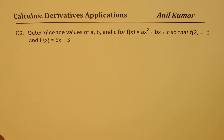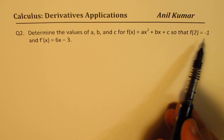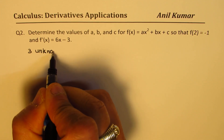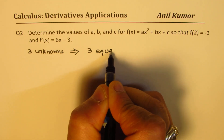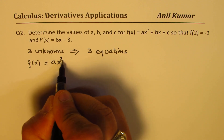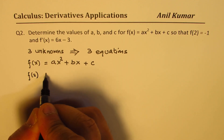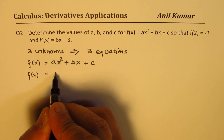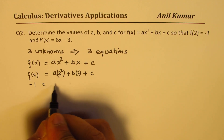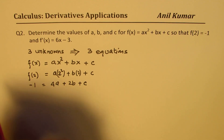Question number 2: determine the value of a, b, and c for the given quadratic equation in general form, so that f of 2 is minus 1 and the derivative is 6x minus 3. We have three unknowns, so we need three equations. First, from f of x equals ax squared plus bx plus c and f of 2 equals minus 1, replacing x with 2: a times 4 plus b times 2 plus c equals minus 1, giving us 4a plus 2b plus c equals minus 1. That's equation number 1.